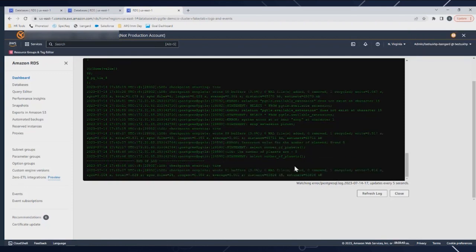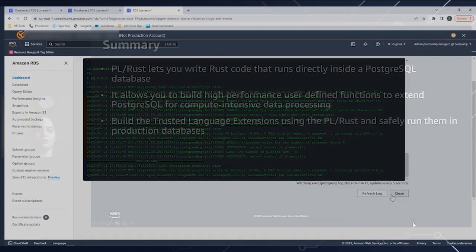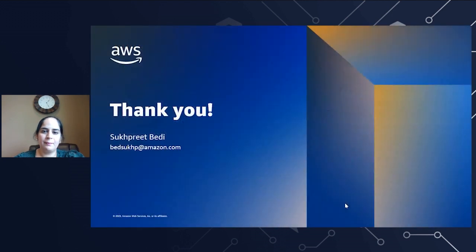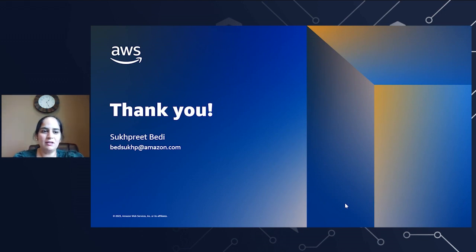This concludes the demo. To summarize the session: PL Rust enables you to build high-performance user-defined functions using Rust code and wrap them into an extension using the Trusted Language Extensions framework. Thank you everyone for joining me today. I'm super excited to see the awesome extensions you will build using PL Rust and TLE. Have a great day.